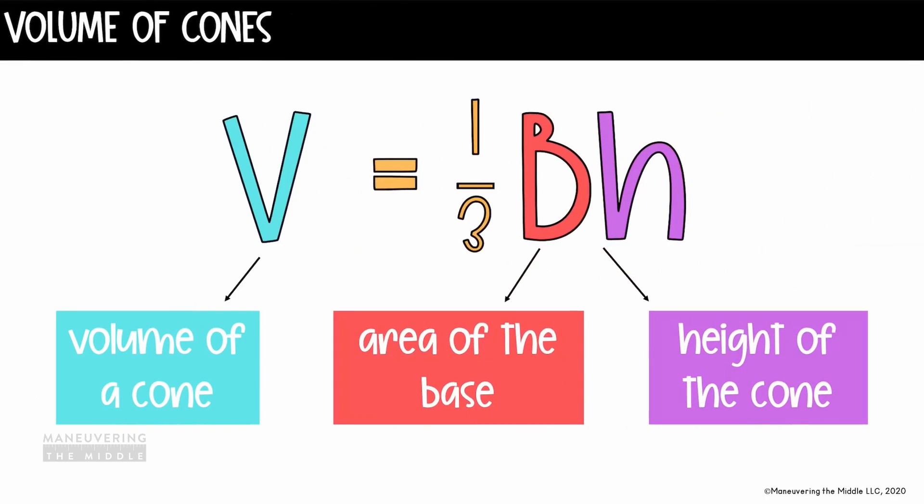We need to understand that so we can correctly use the formula for finding the cone's volume, which tells us we need to multiply 1/3 times capital B times h. Notice what this capital B represents, which is the area of the base. If the base of a cone is always a circle, then the area of the base can always be found using the formula πr².